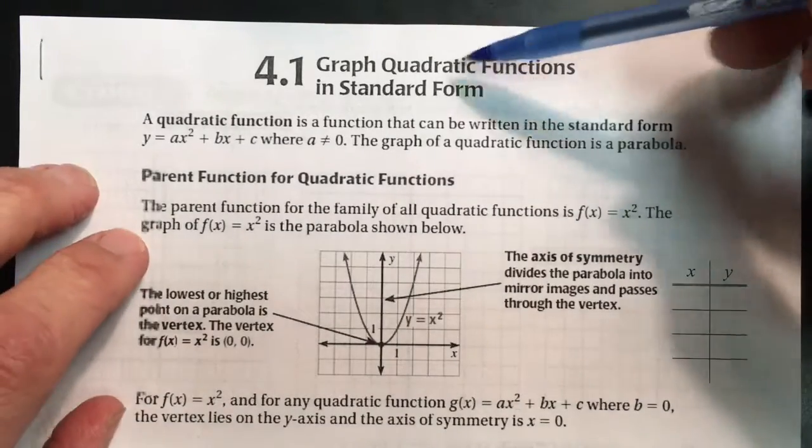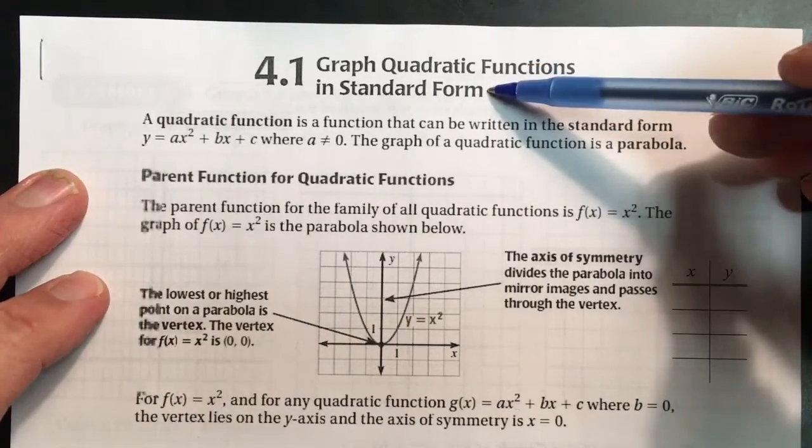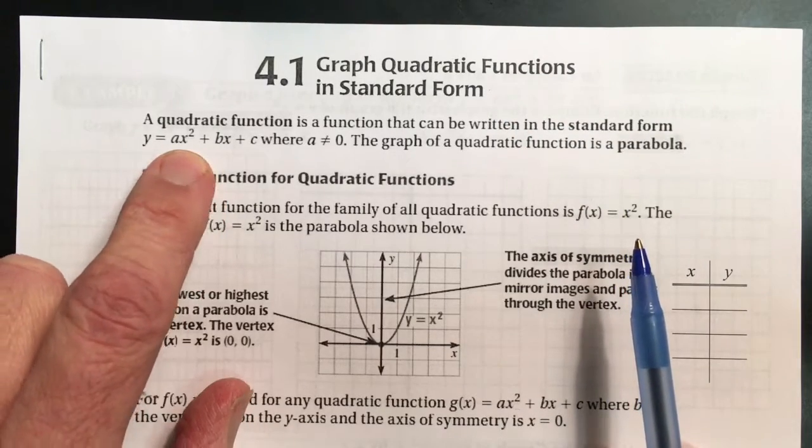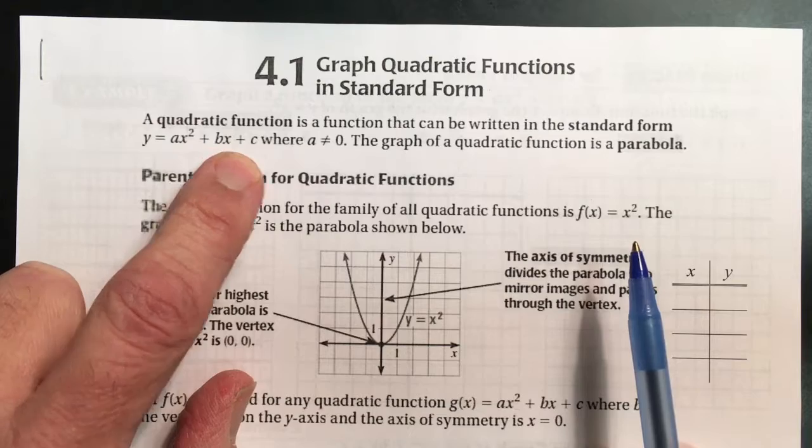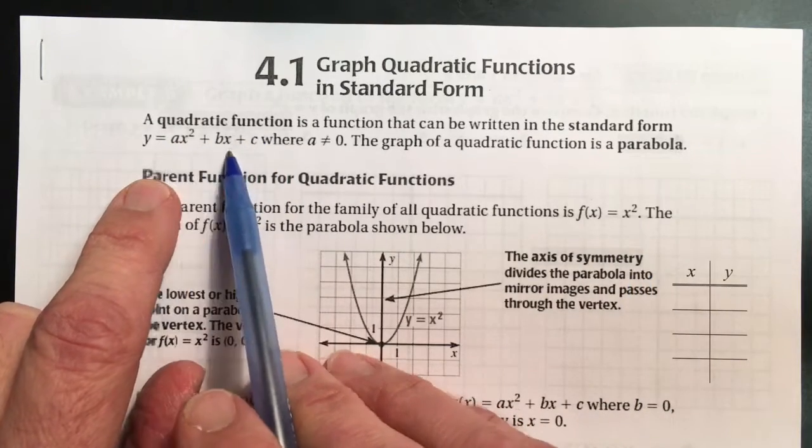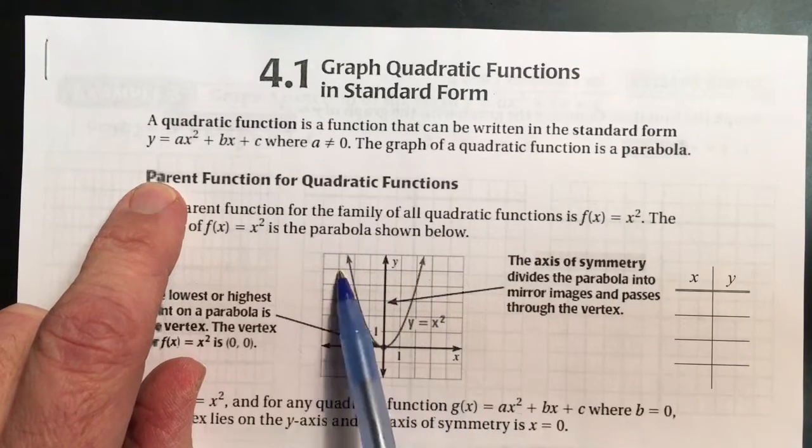Section 4.1, graphing quadratic functions in standard form. The standard form for quadratics is y equals ax squared plus bx plus c. Each of these terms has drastic effects on how it affects the parabola that's formed.